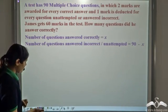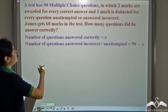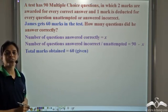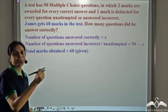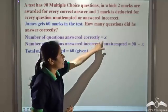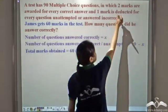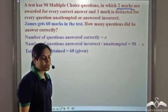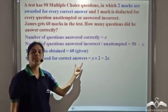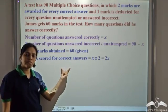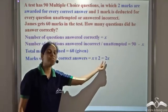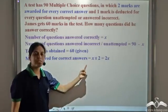The next step is to see what is given to us. It is given that James gets 60 marks in the test, so marks obtained by James is equal to 60. James answered x questions correctly, and for each correct answer he gets 2 marks. So marks scored from correct answers will be x into 2, that is 2x. So marks obtained for correct answers is 2x.